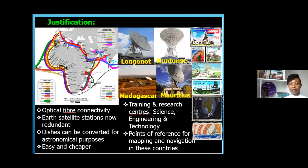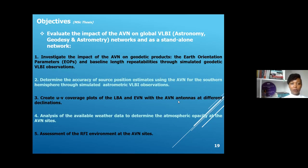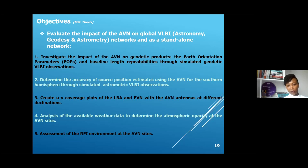These sites can also become points of reference for mapping and navigation. For example, we have the Longonot Station in Kenya, the Madagascar site, the dish in Kutunse in Ghana, and Mauritius. Our objective was to evaluate the impact of a possible array of VLBI antennas in Africa on global VLBI networks in terms of astronomy, geodesy, and astrometry — investigating the impact of the AVN on geodetic products through simulated Earth orientation parameters, accuracy of source positions in the Southern Hemisphere, and UV coverage plots.